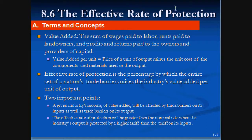The effective rate of protection is something everyone should know — it's simple and easy. Value added is the sum of wages paid to labor, rents paid to landowners, profits, and returns paid to the owners and providers of capital. The value added per unit equals the price of a unit of output minus the unit cost of components and materials used in producing that output. The effective rate of protection is the percentage by which trade barriers raise the industry's value added per unit: new value added minus old value added, divided by old value added.